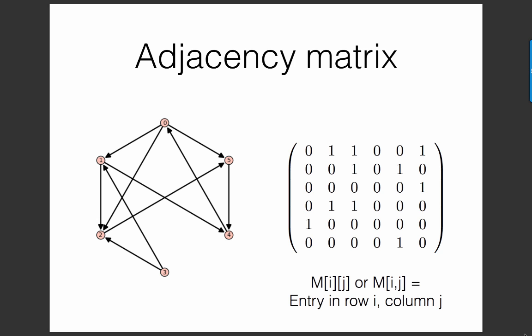And inside the matrix, we're going to put a 1 in the position at row i, column j, if there is an edge pointing from i to j, and then put a 0 otherwise.